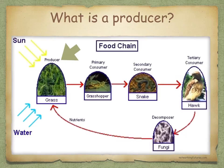A producer is a photosynthetic organism that manufactures organic substances using light energy, water, and carbon dioxide. The rate at which they produce this organic food is referred to as their productivity.